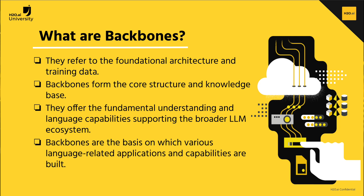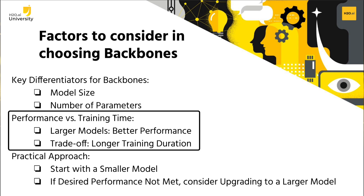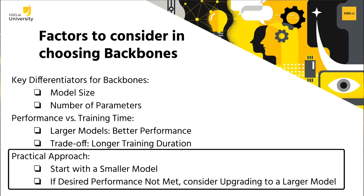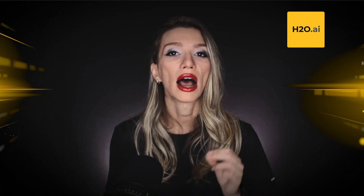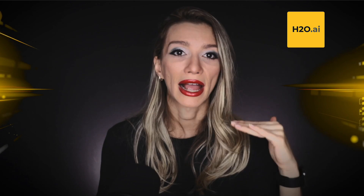When it comes to large language model backbones, it's important to understand that many of them share a similar foundation in terms of the data they've been trained on. In the context of large language models, backbones refer to the foundational architecture and training data that these models are built upon. These backbones serve as the core structure and knowledge base from which various LLM variants are derived through fine-tuning and customization for specific tasks or applications, providing the fundamental understanding and language capabilities that underlie the broader LLM ecosystem. The primary distinguishing factors among these backbones are the model's size and the number of parameters they possess. In general, larger models tend to deliver superior performance, but this comes at the expense of longer training durations. Starting with a smaller model is recommended, and if the desired performance isn't achieved, you can consider upgrading to a larger one. However, for tasks extending beyond English question answering, specialized LLM backbones tailored for specific applications can prove advantageous.